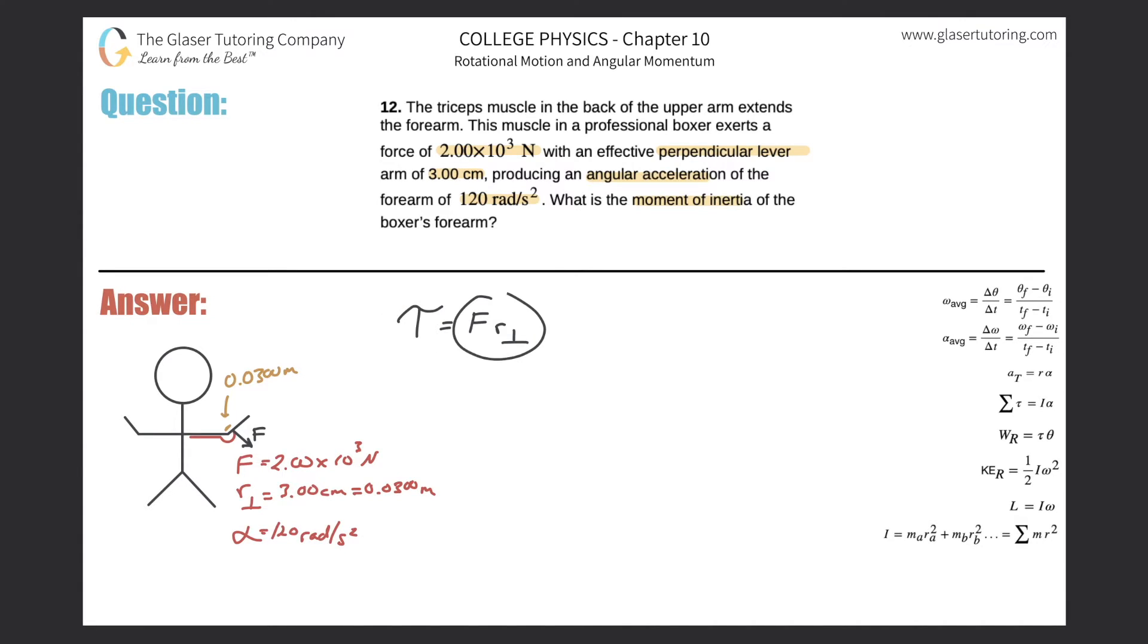Now basically we know that these two give us a torque. So what I'm thinking now to myself is these two values give me a torque. The problem also says that this forearm will be rotating or has an angular acceleration of 120 radians per second squared, so it gave me an alpha.